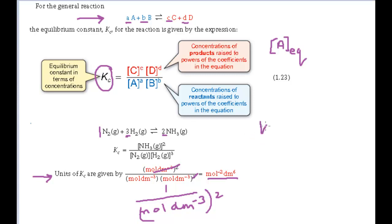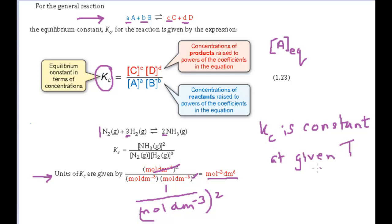The important thing to remember is that Kc is a constant at a given temperature. If you change any of the concentrations at equilibrium at constant temperature, the concentrations of reactants and products will adjust to give a new position of equilibrium with the same value of Kc. But if you change the temperature, the concentrations will adjust to give a new position of equilibrium with a different value of Kc, so you must always quote a temperature along with a value of Kc.